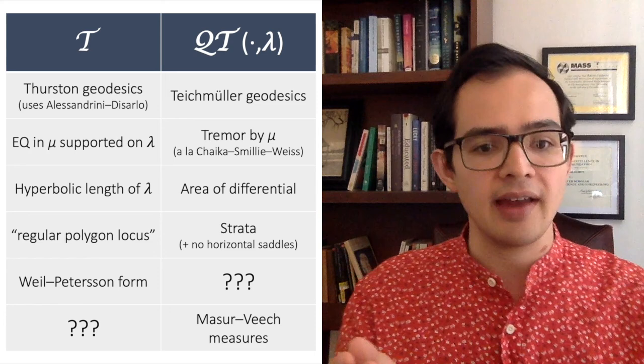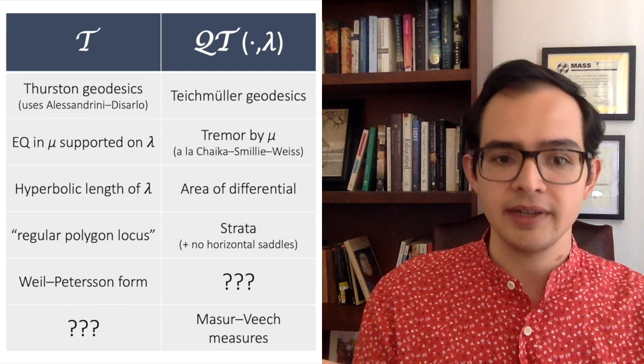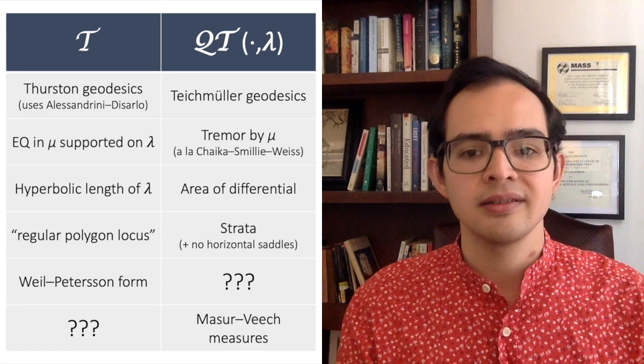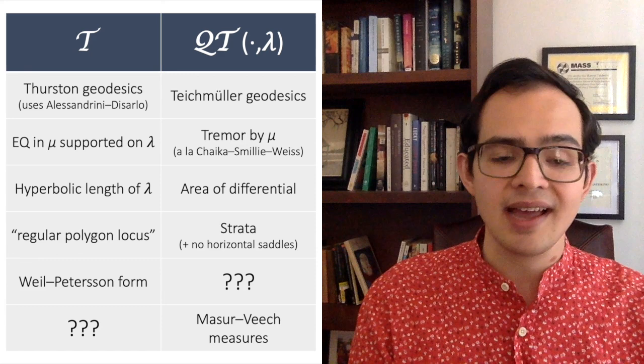In conclusion, I've demonstrated how to use the orthogeodesic foliation coordinates from Part 1 to extend Mirzakhani's conjugacy between the earthquake and horocycle flows to an equivariant bijection. But there's a lot more to this map than just unipotent flows: it also relates hyperbolic length and flat area, Thurston geodesics and Teichmüller geodesics, earthquakes in non-uniquely ergodic laminations, and the tremor flow of Chaika, Smillie, and Weiss. There's still a lot we don't yet understand, like the interaction of the map with invariant measures or the symplectic structure. I think it's a fascinating question to ask exactly how far this correspondence extends and what new insights into flat or hyperbolic geometry it can provide. I look forward to your questions. Thanks for watching.